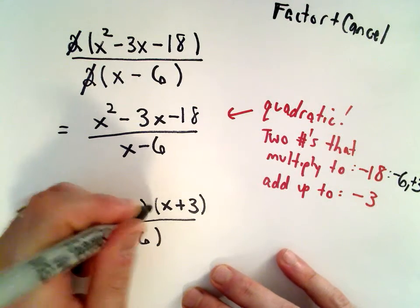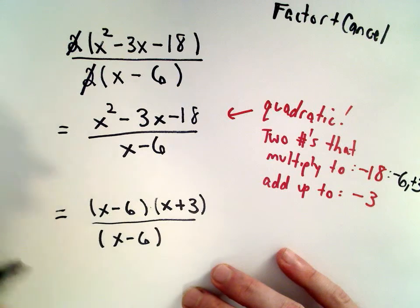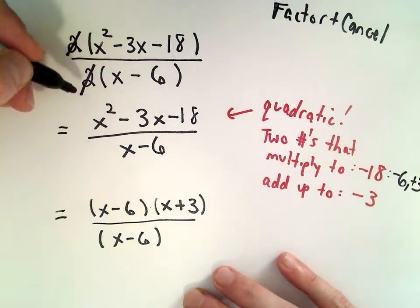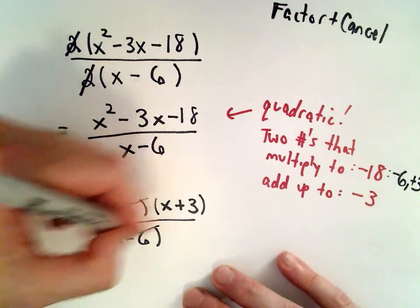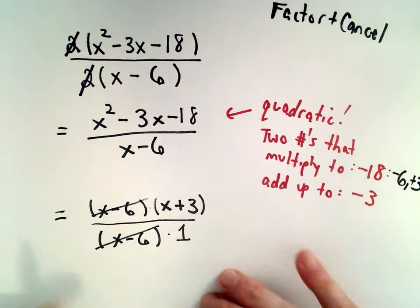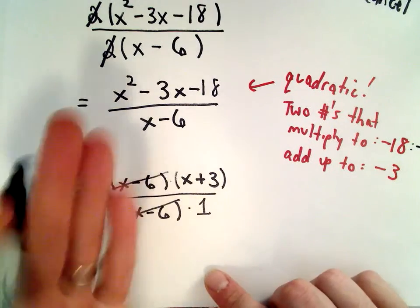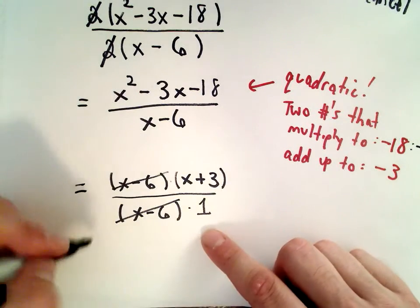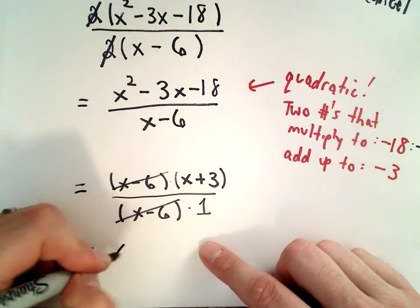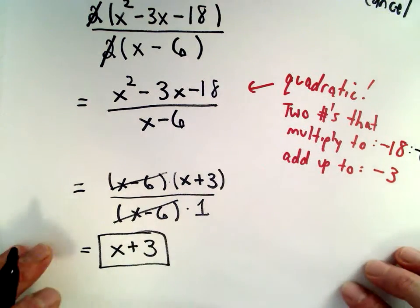Well, I've got this expression multiplied by this expression. I've got that same x minus 6 expression in the denominator, just like we canceled out the 2's. We can cancel out the x minus 6's. Again, you can imagine that there was an imaginary 1 in the denominator. Well, you're left with x plus 3 divided by 1. Anything divided by 1 is just itself, so our solution is going to be x plus 3, which would be answer choice C.